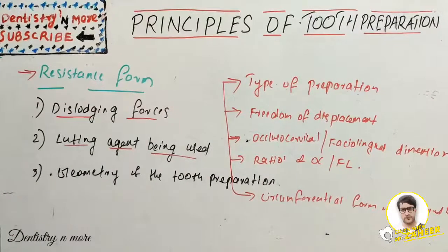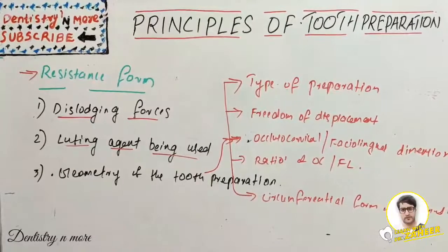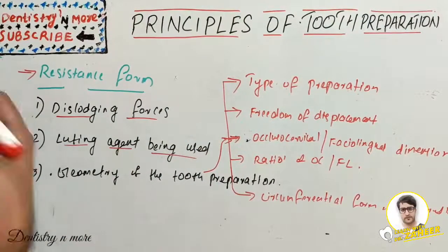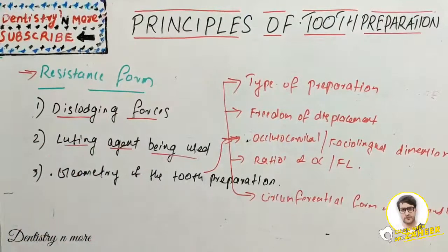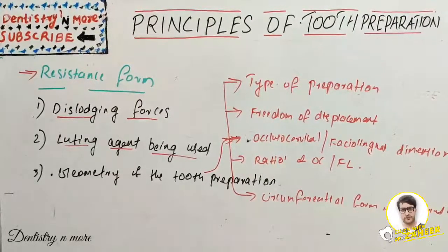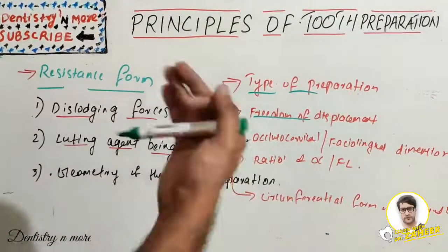Geometry of tooth preparation for resistance includes: type of preparation, freedom of displacement, occlusal-cervical or incisor-cervical dimensions, ratio of occlusal-cervical to facial-lingual dimension, and circumferential form of the prepared tooth. Regarding type of preparation: partial coverage restoration has less resistance than complete crown because there is no buccal resistance wall. We can provide grooves or boxes to increase resistance, as resistance is greatest when walls are perpendicular to the direction of force.